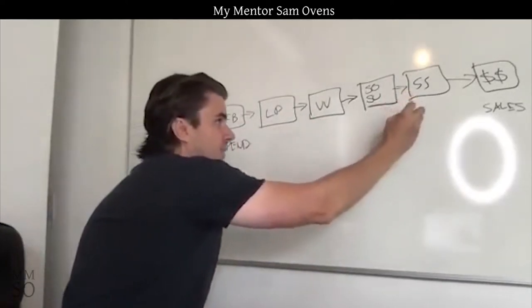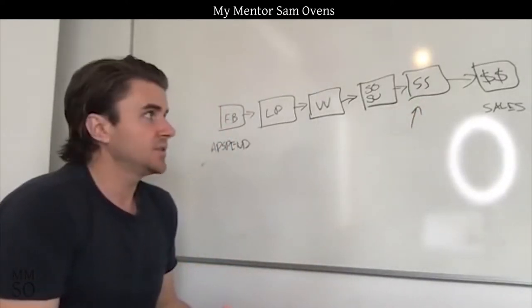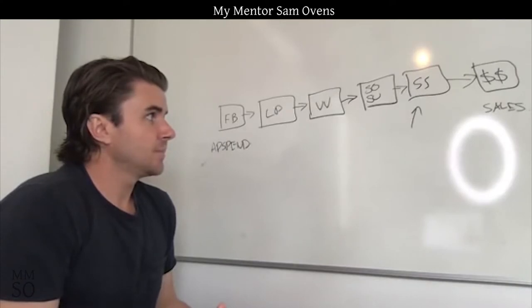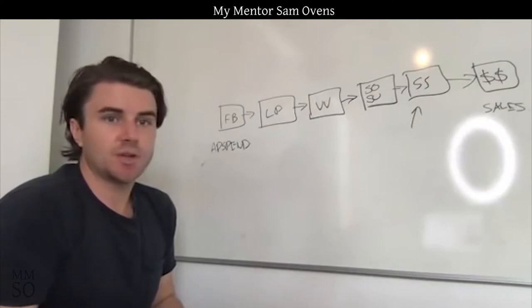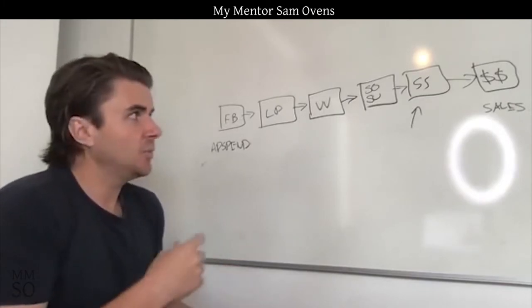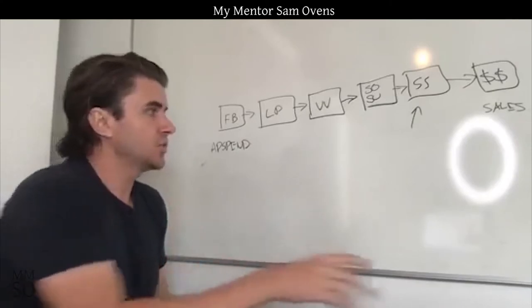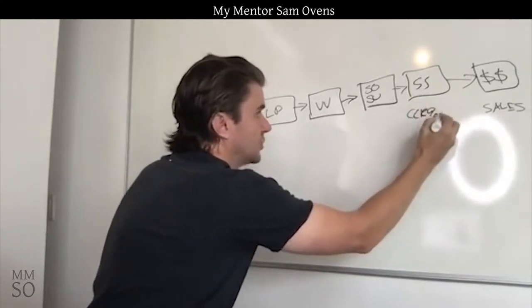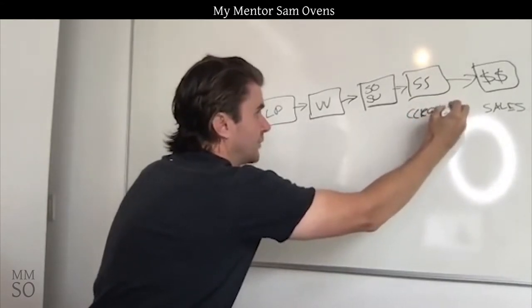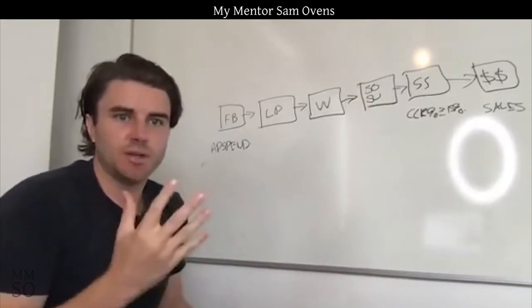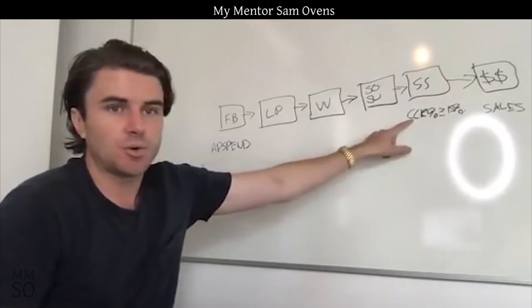So I'll ask: how many strategy sessions have you generated? Let's say this person generated five strategy sessions. I'd figure out their call conversion rate — how many strategy sessions did you generate, how many sales did you make? The call conversion rate should be greater than or equal to 15%, and the higher the better. But if they generated five strategy sessions and made zero sales, then we can't figure out the call conversion rate.